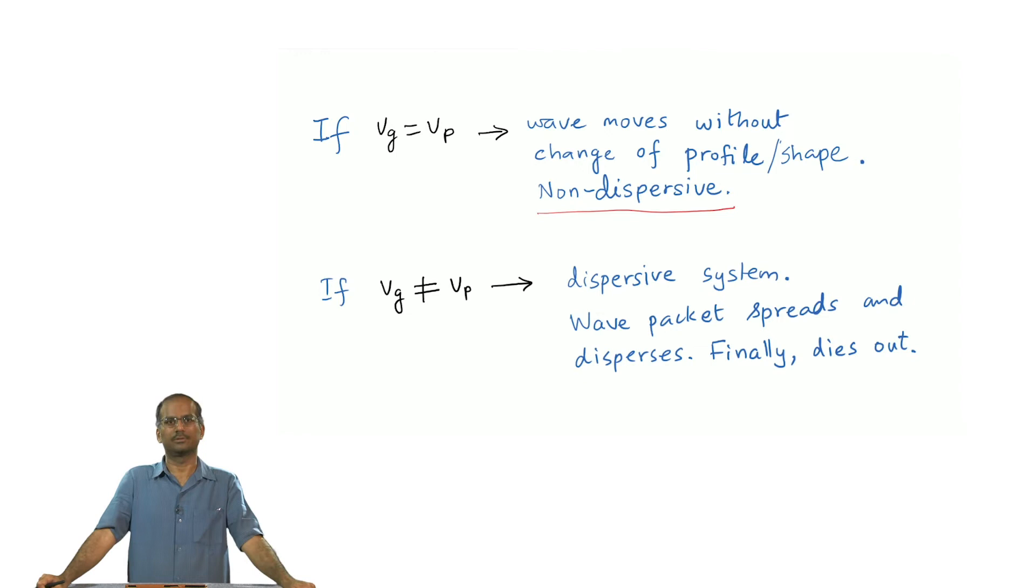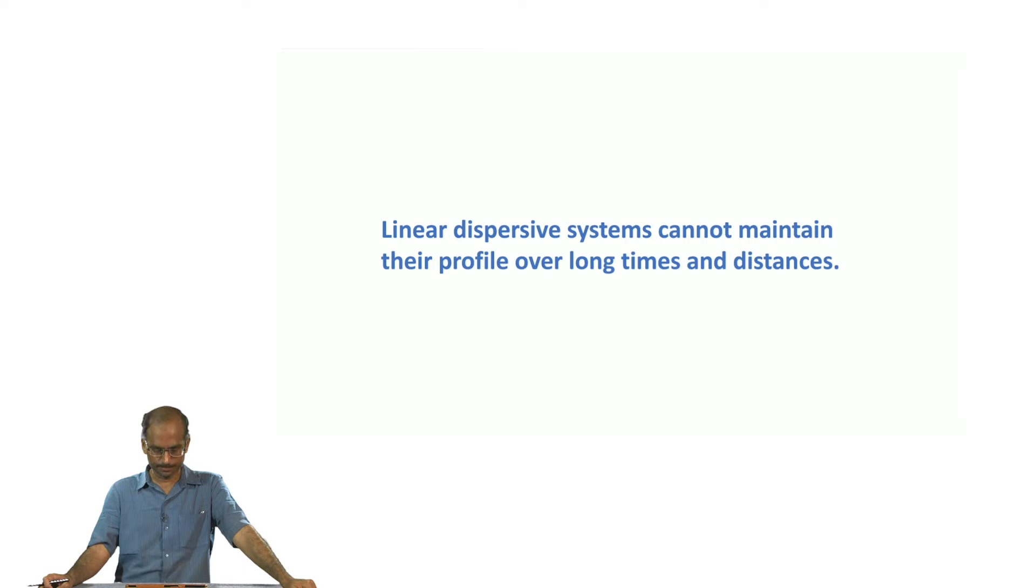That is what happens when v_g is not equal to v_p. We can write this out as a general conclusion. If your solutions of waveforms come from a linear partial differential equation - in other words if they are linear dispersive systems - the solutions cannot maintain their profile over long times and long distances. A profile that you create initially, as it travels over time and over distance, will disintegrate generally, except in the special case where v_g is equal to v_p. But that is a very rare and special situation. Otherwise in most realistic cases it is going to disintegrate.